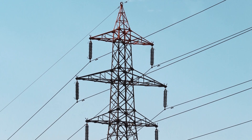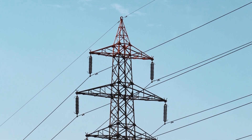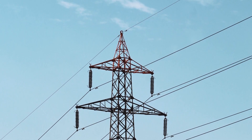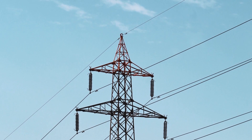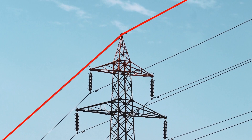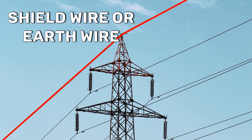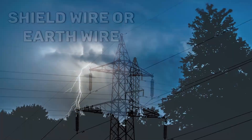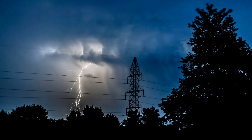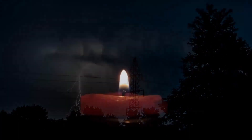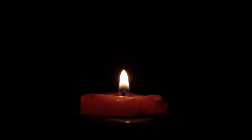Other than these conductors, another wire is directly connected to the top of the tower. They are called shield wire or earth wire. They are used to protect conductors from direct lightning strikes and minimize the possibility of power outages.